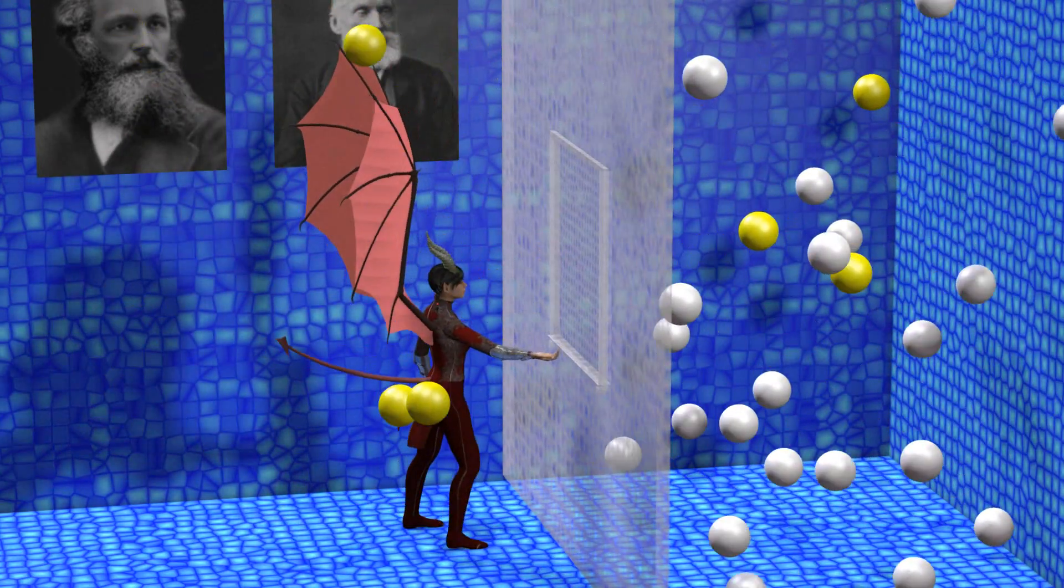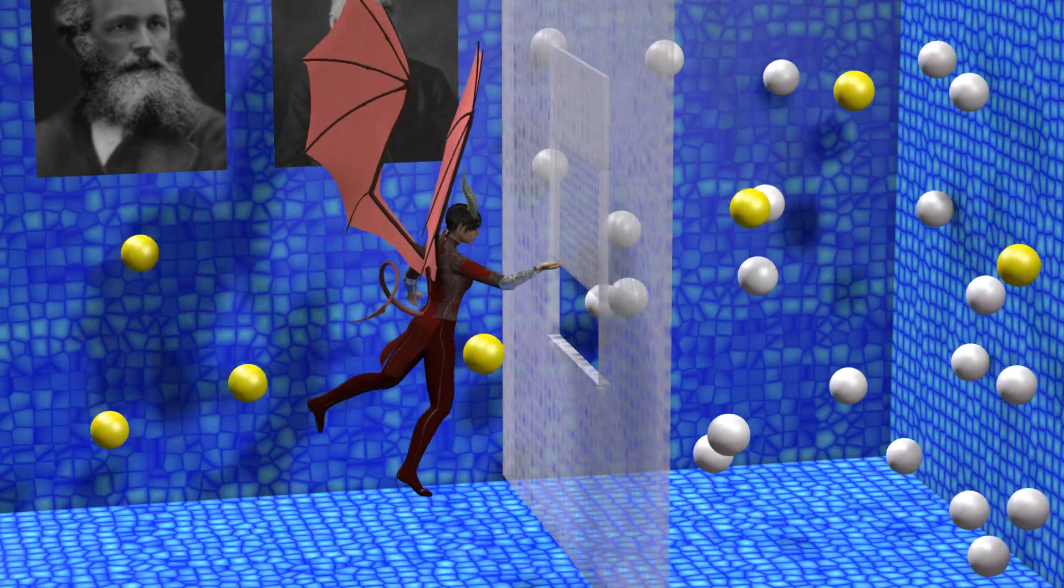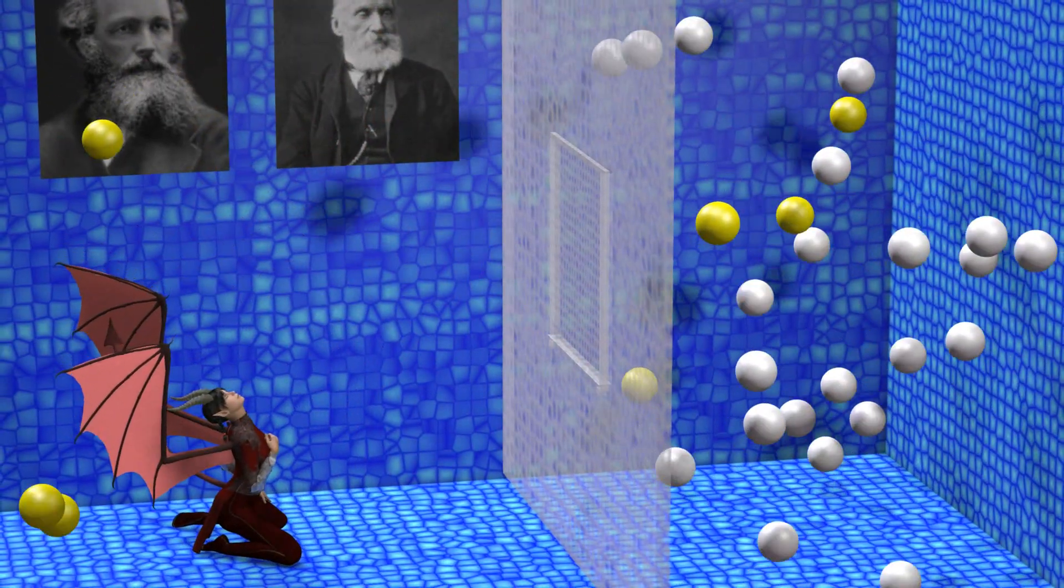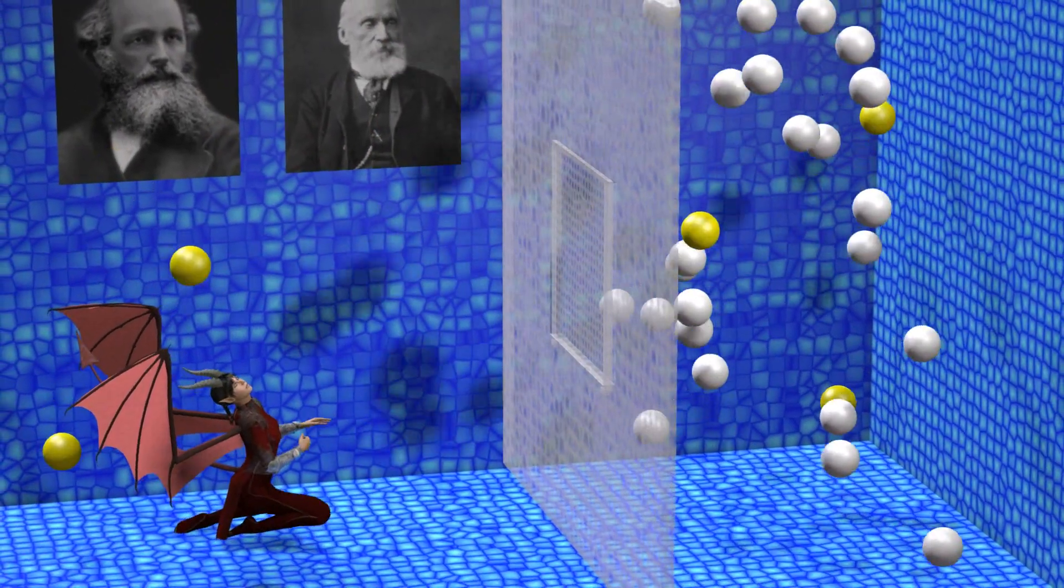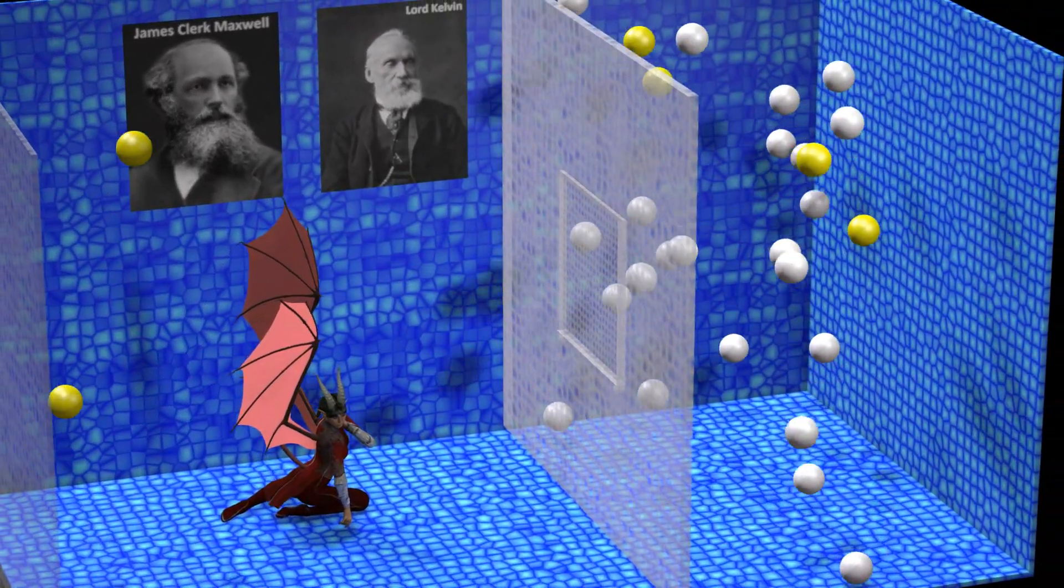What is shown here is actually a slight variation of Maxwell's original idea, which involved operating the door such that all the fast particles end up on one side, and all the slow particles end up on the other side, but the general concept is the same.